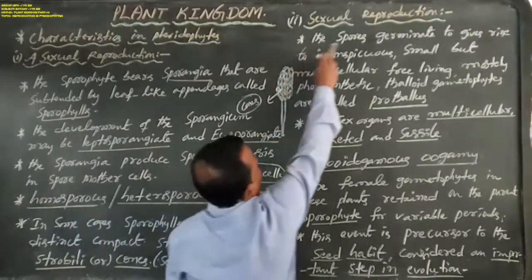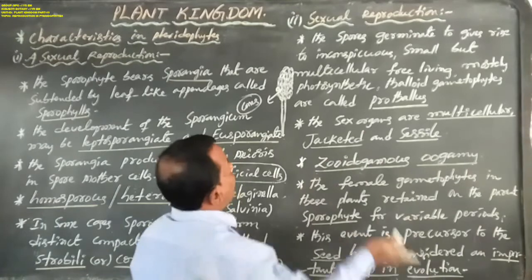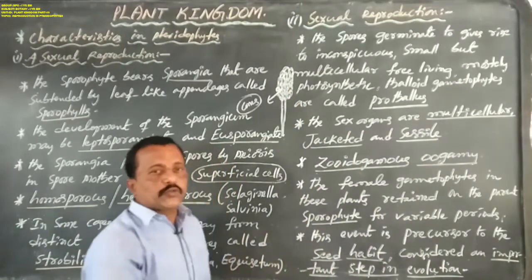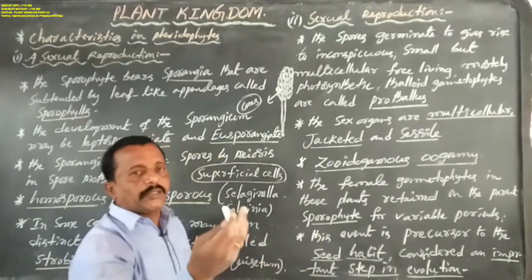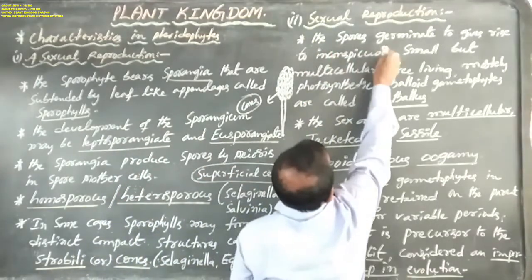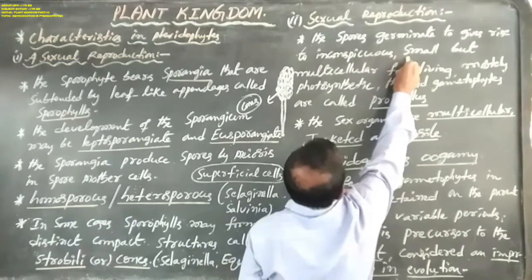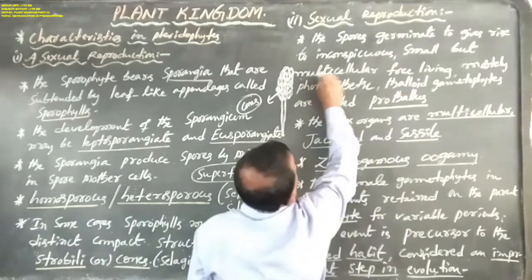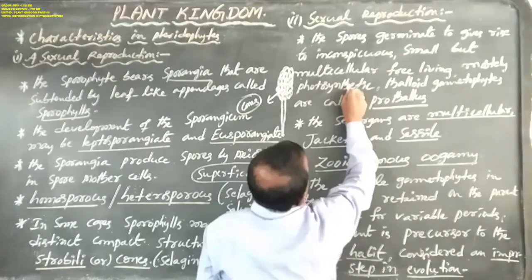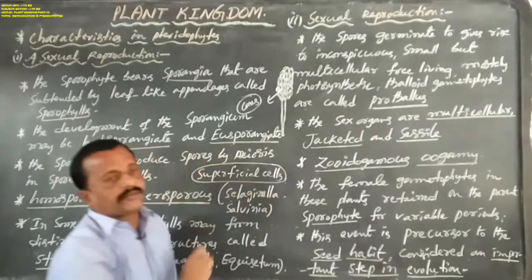Now, coming to sexual reproduction. These spores — whether homosporous or heterosporous — germinate to give rise to inconspicuous, small but multicellular, free-living, mostly photosynthetic thaloid gametophytes, which are called prothallus.